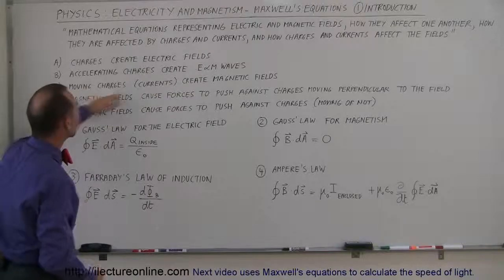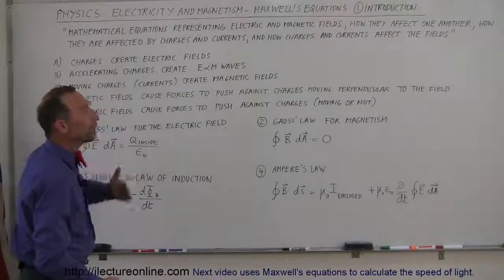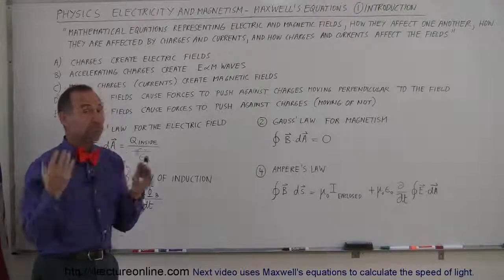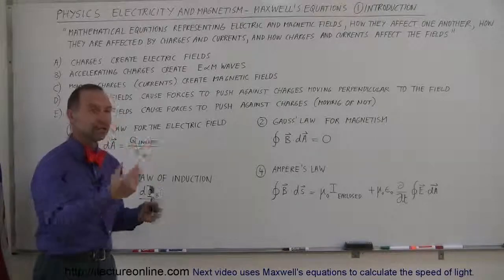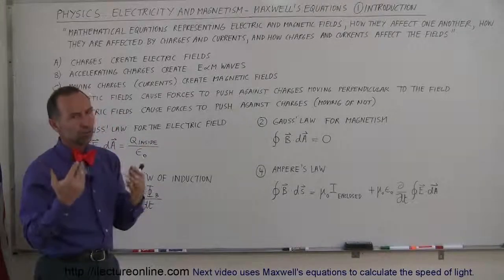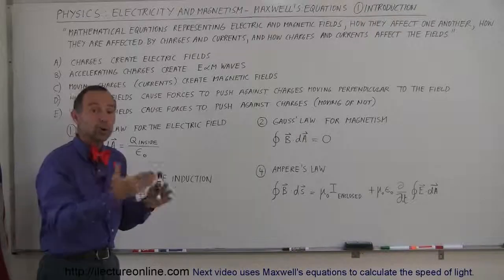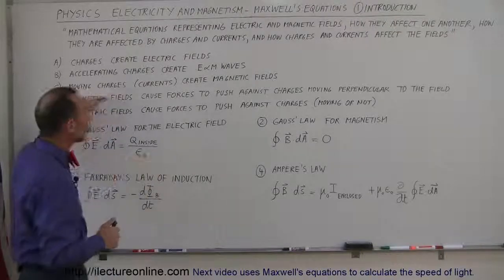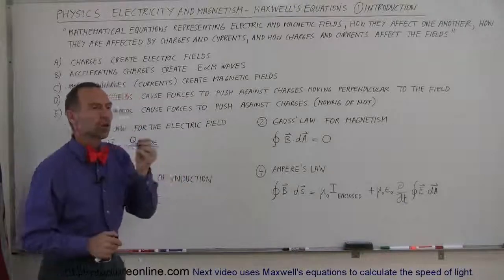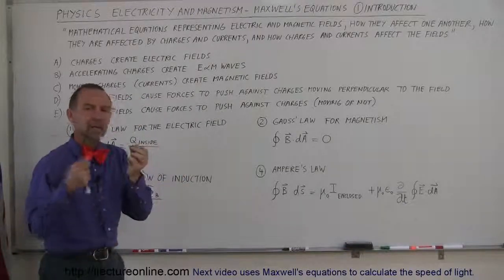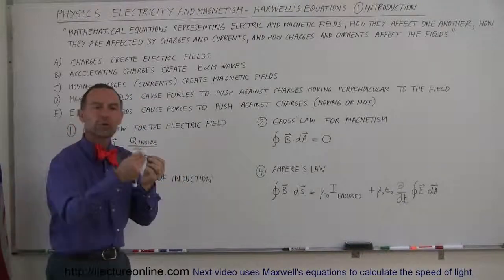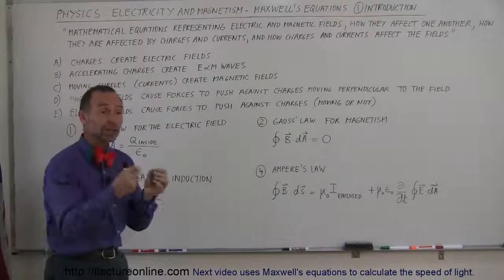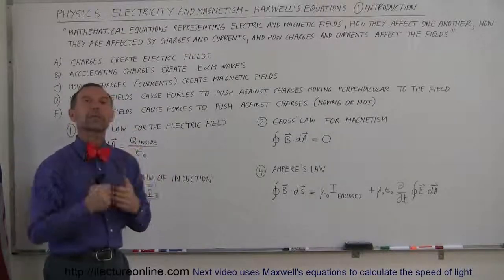Thirdly, moving charges or currents create magnetic fields. Whenever you have moving charges — they don't need to be accelerated, they just need to be moving — and moving charges, by definition, is a current. A current is a set of moving charges, and those will create magnetic fields. Magnetic fields can only be created if charges are moving. If charges are not moving, there will not be a magnetic field.